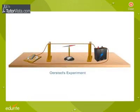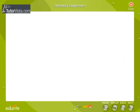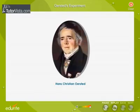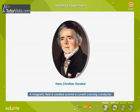Orsted's Experiment. Danish school teacher Hans Christian Orsted in the year 1820 concluded a magnetic field is created around a current-carrying conductor.